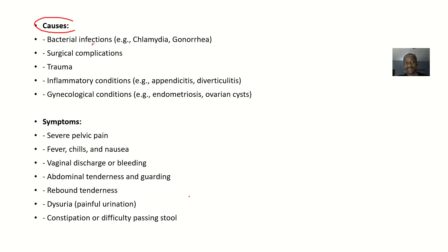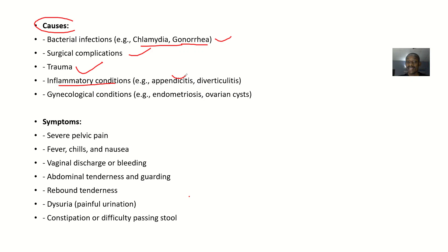The possible causes of pelvic abscess include bacterial infections such as chlamydia and gonorrhea. It could also be due to surgical complications where wounds did not heal properly, leading to abscess formation. Trauma is another cause, as well as inflammatory conditions like appendicitis and diverticulitis — that is, inflammation of the appendix and diverticulum respectively. Gynecological conditions such as endometriosis and ovarian cysts can also be contributing factors.